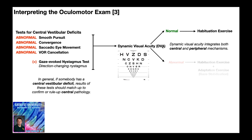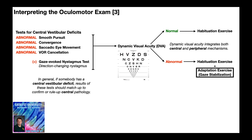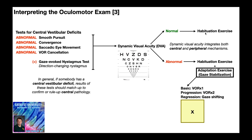The other result of the DVA could be that it's abnormal — a three-line difference or more. They're still going to require habituation exercises because they have a central vestibular deficit, but having an abnormal DVA suggests their gaze stabilization is impaired. To promote gaze stabilization, we give an adaptation exercise. The main adaptation exercises are these right here: the most basic is the VOR times one, which can be progressed into the VOR times two, or regressed into gaze shifting. What we have not talked about yet is habituation — what habituation exercises are, their rationale, and how to do them — and that's what we'll be covering in the next couple of videos.